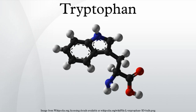Biosynthesis and industrial production: Plants and microorganisms commonly synthesize tryptophan from shikimic acid or anthranilate. The latter condenses with phosphoribosylpyrophosphate, generating pyrophosphate as a byproduct. After ring opening of the ribose moiety and following reductive decarboxylation, indole-3-glycerol phosphate is produced, which in turn is transformed into indole. In the last step, tryptophan synthase catalyzes the formation of tryptophan from indole and the amino acid serine.